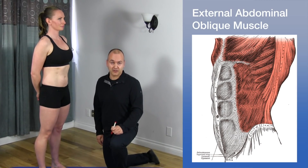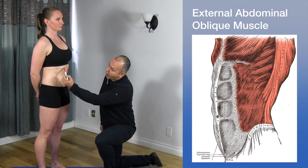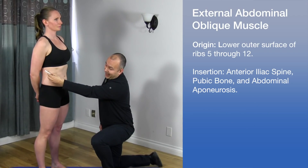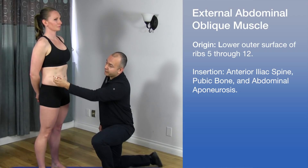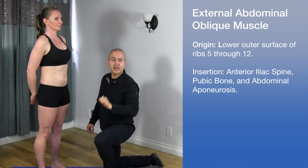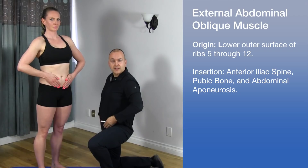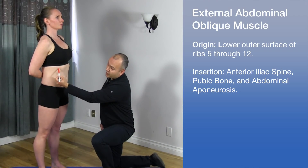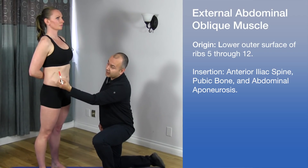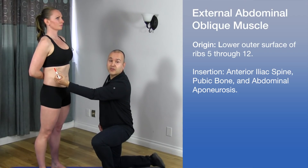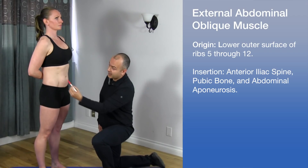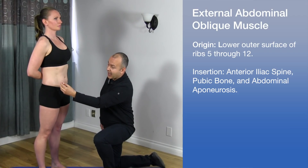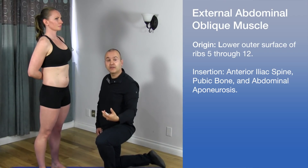The external abdominal oblique muscle originates off ribs five through twelve and is quite superficial. The fibers are oriented from lateral to medial, running diagonally down — we often refer to this as the 'pocket muscle,' because if you place your hands as if putting them in your pockets, that demonstrates the fiber direction. The superior fibers intertwine with the serratus anterior. The muscle inserts along the anterior iliac spine and pubic bone, and part of its aponeurosis helps to form the inguinal ligament.